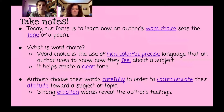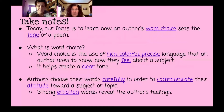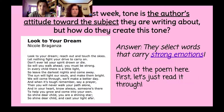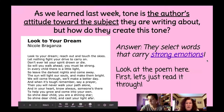So today, our focus is to learn how an author's word choice sets the tone of a poem. Word choice is the use of rich, colorful, precise language that an author uses to show how they feel about a subject. It helps create a clear tone. Authors choose their words carefully in order to communicate their attitude toward a subject or topic. Strong emotion words reveal the author's feelings. As we learned last week, the tone is the author's attitude about the subject they're writing about.